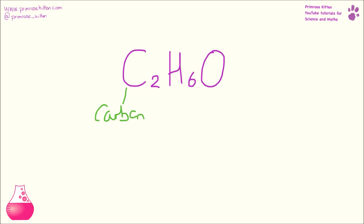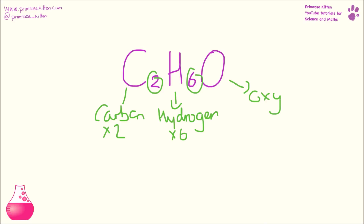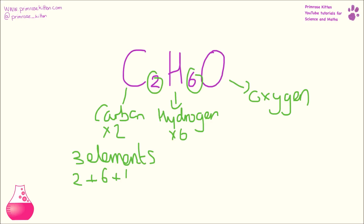This is carbon, and this number here tells me there are two of them. This is hydrogen, and this tells me there are six of them. And this is oxygen. So there are three elements — carbon, hydrogen, oxygen — and two carbons plus six hydrogens plus one oxygen means that there are nine atoms.